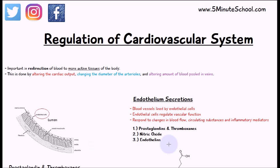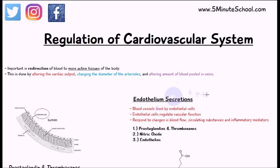The redirection of blood is very important because some tissues in the body may be more active than others depending on circumstances. This redirection allows oxygen and nutrients to pass to the more active regions of the body which require them. It's achieved by altering cardiac output — the amount of blood extruded from the heart — changing the diameter of the arterioles, and altering the amount of blood pooled in the veins.